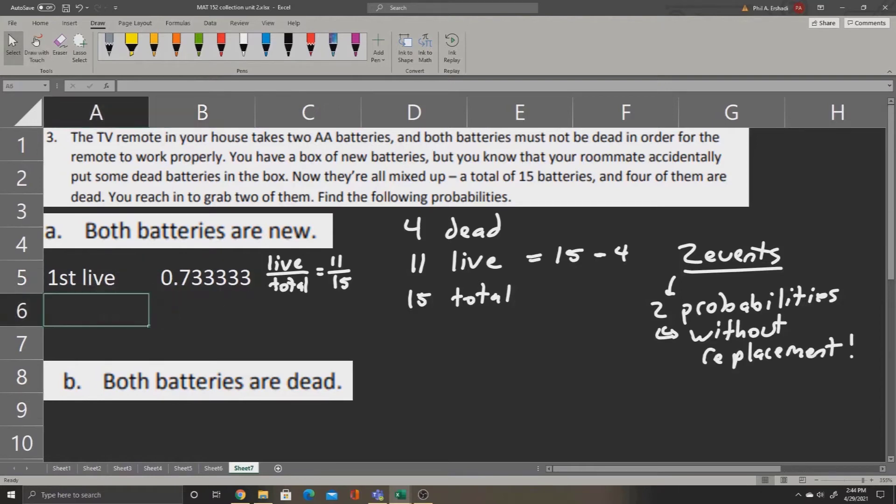So to find the probability of getting the second live battery, we now have only 10 live batteries left in the pile, because we used to have 11 and we've already taken one out. Also we used to have 15 total batteries, but we've taken one out. This gives us 10 over 14. So our probability is equals 10 divided by 14.